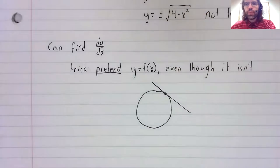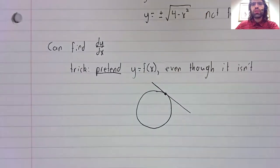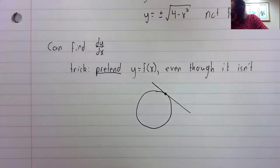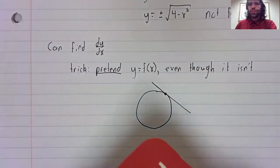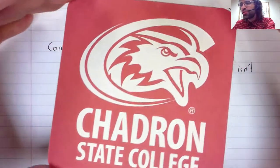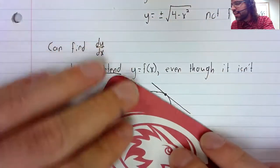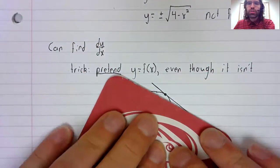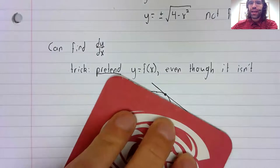Suppose that we want to talk about the line tangent to this curve at a point. Well, I'm going to take this Chadron State College coaster, and I am going to cover up part of this graph.